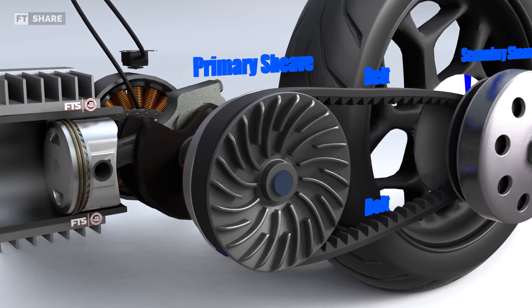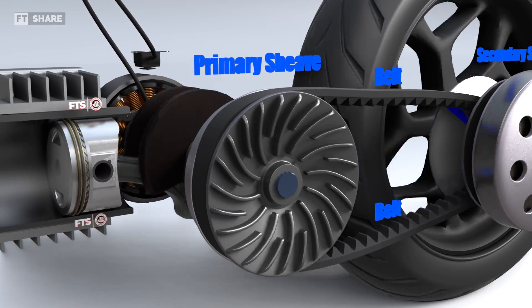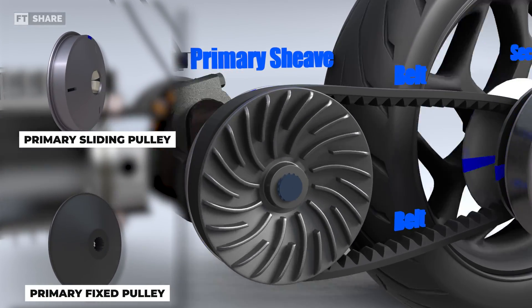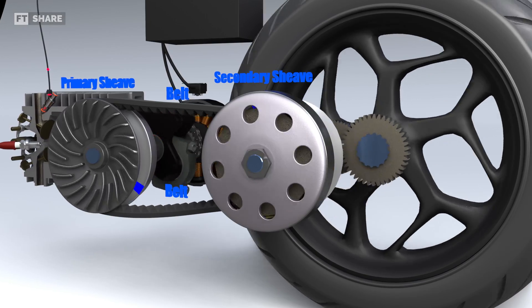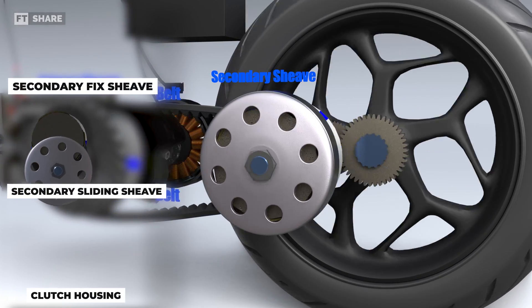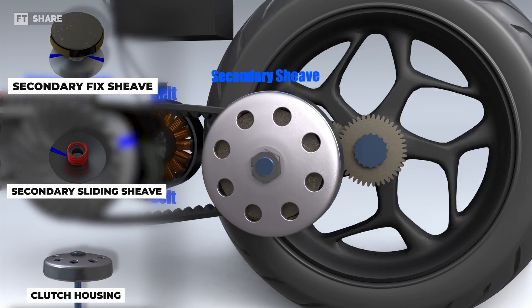We'll start by looking at the primary pulley, which typically consists of two conical plates: the primary sliding pulley and the primary fixed pulley. Moving to the back, we'll also find two tapered plates, the secondary fixed sheave and the secondary sliding sheave.